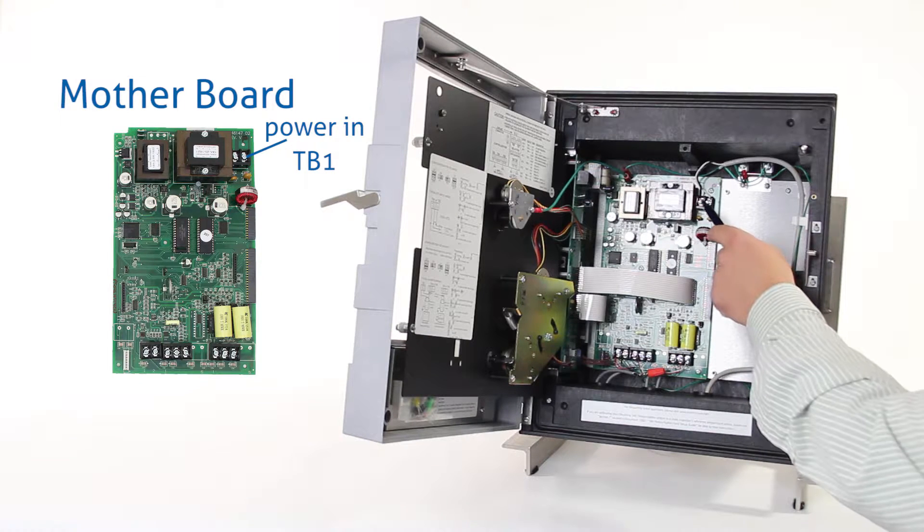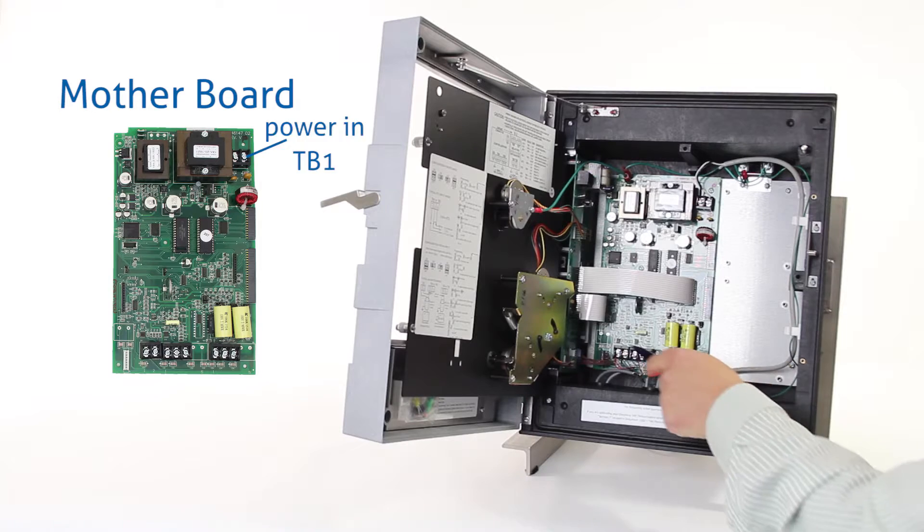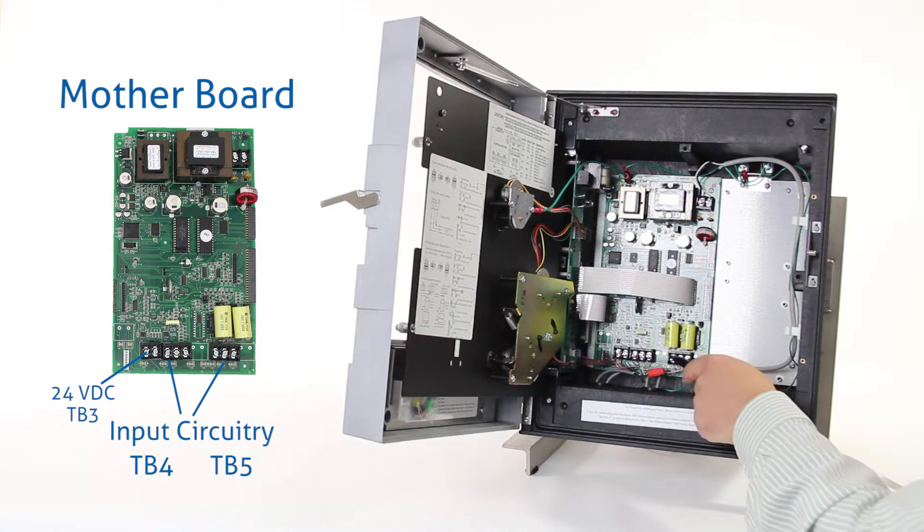The power comes in up on the top right here next to the transformer on TB1, and the input circuitry comes in down on the bottom of the board.